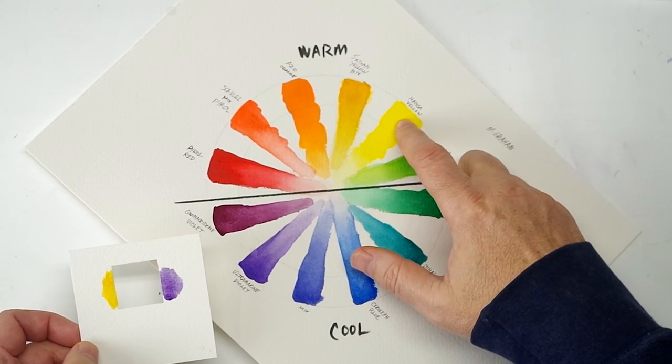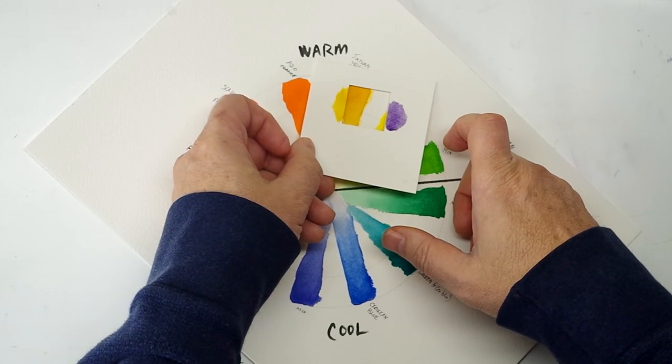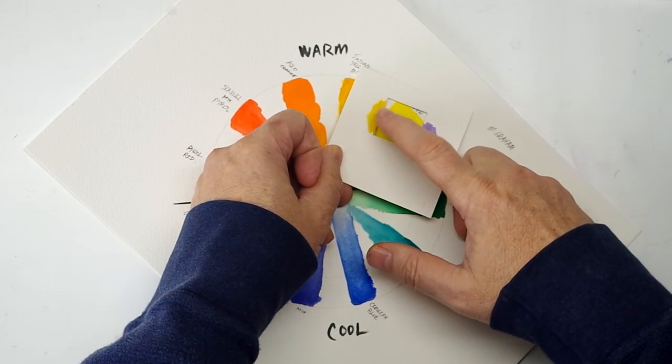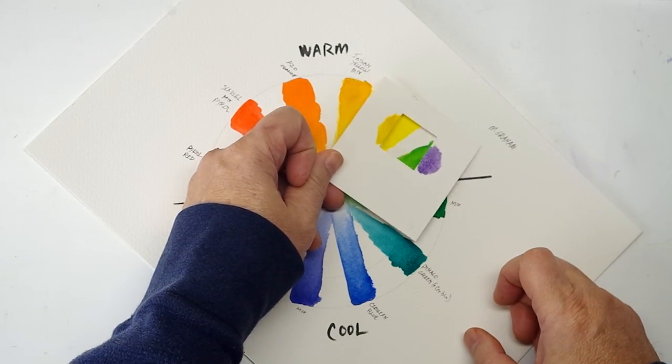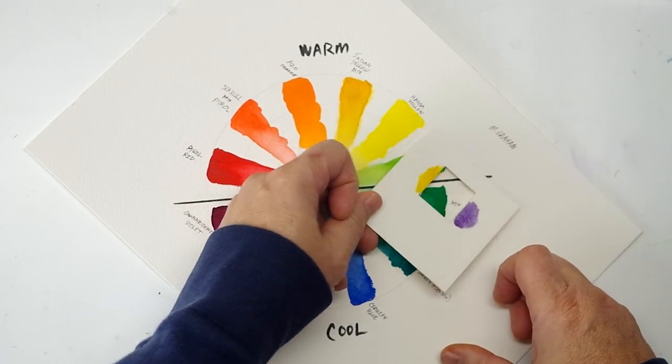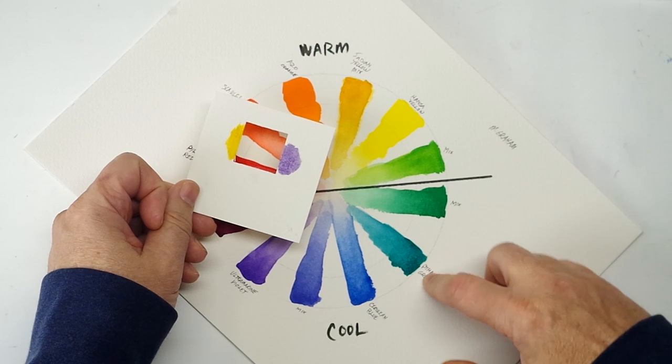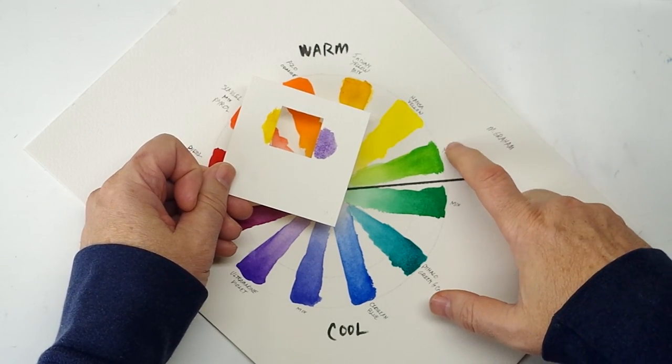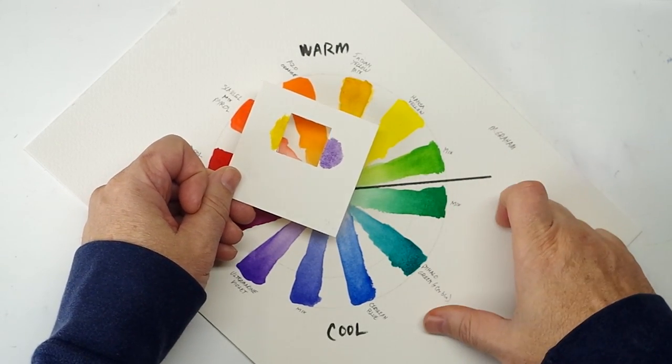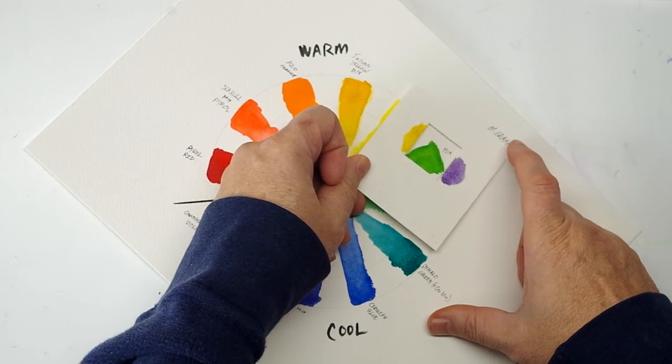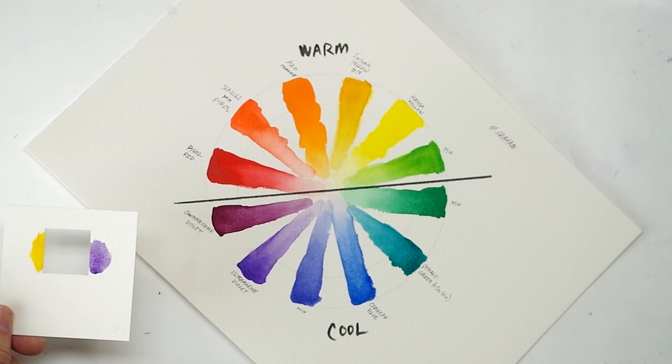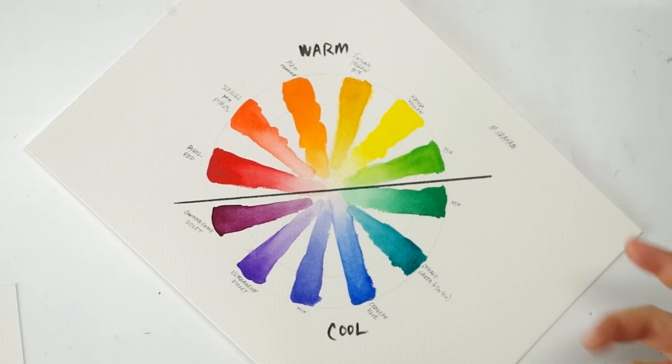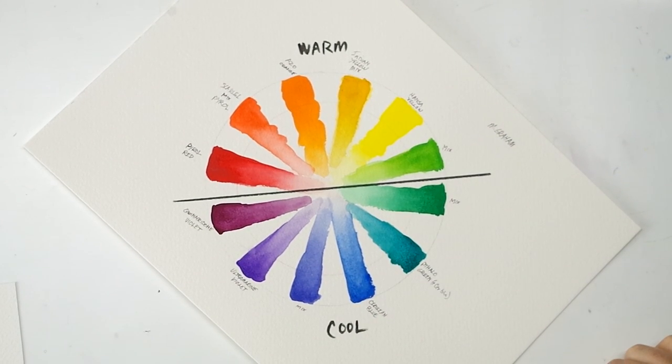Let's say I'm painting with a Hansa yellow or this Indian yellow or this nickel azo yellow that's close to an Indian yellow, and I wanted to cool that down a little bit. Well, I go this way. I add some greens, maybe some phthalo green, maybe some permanent green light, maybe a yellow-green. And I start bringing that yellow towards the cool side.